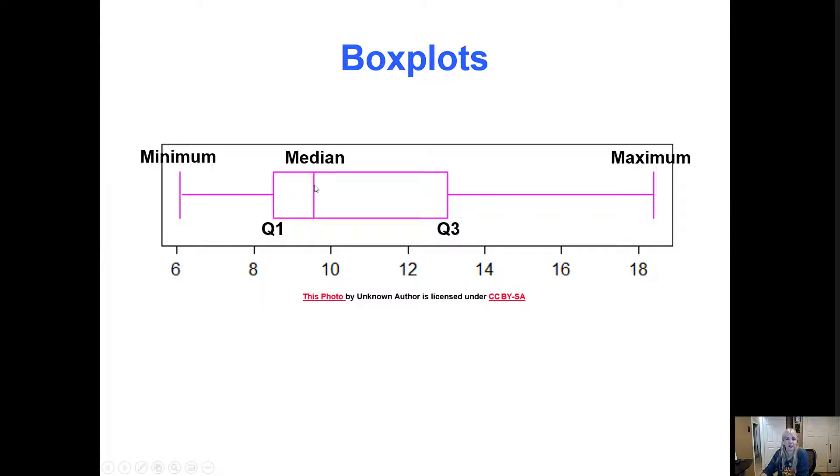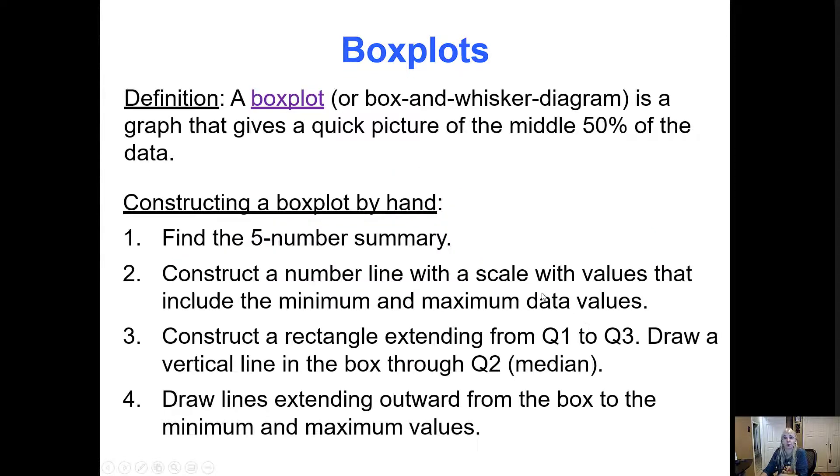These are kind of nice because this median line can move around inside of the box and show you, in this case, it looks like half of the data is mainly above a higher area, probably about almost nine and above. So these are kind of nice to be able to see visually what's going on.